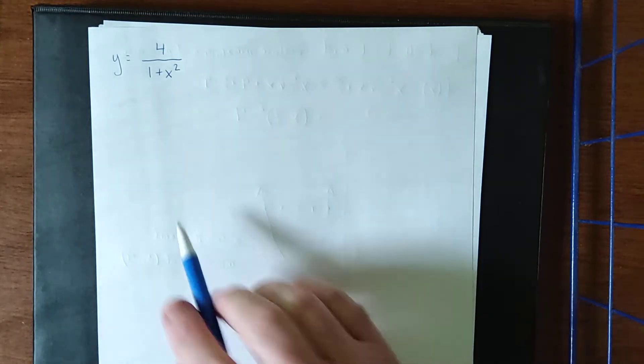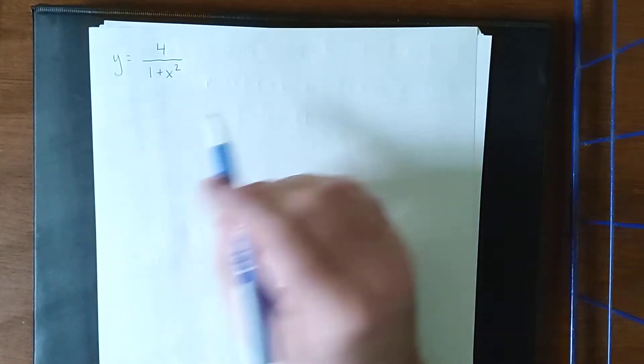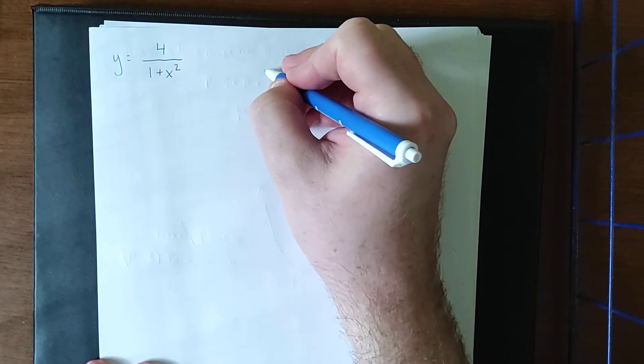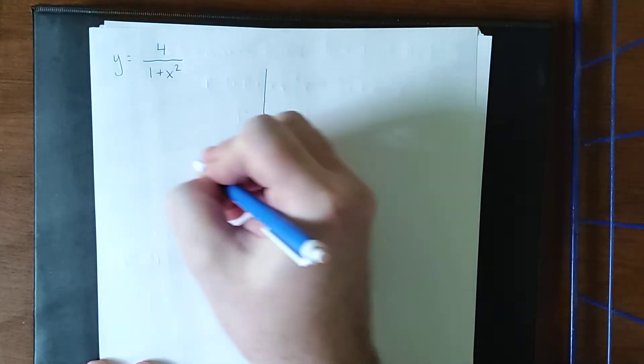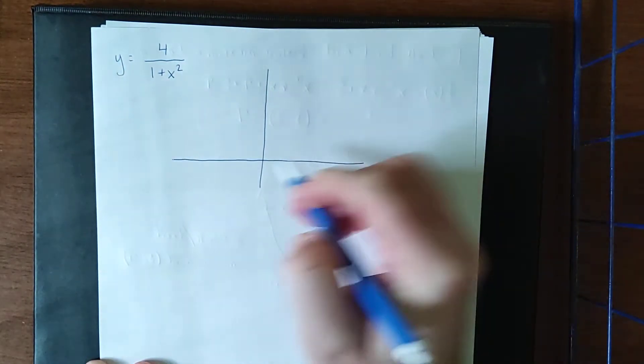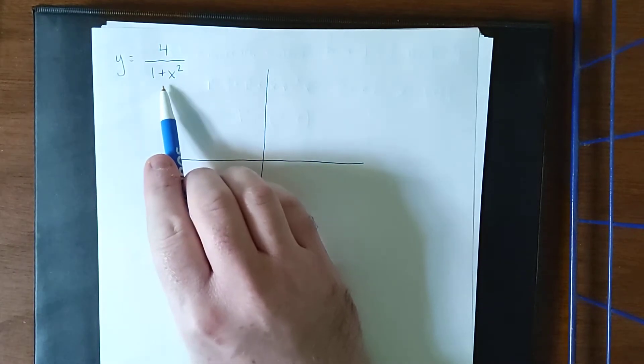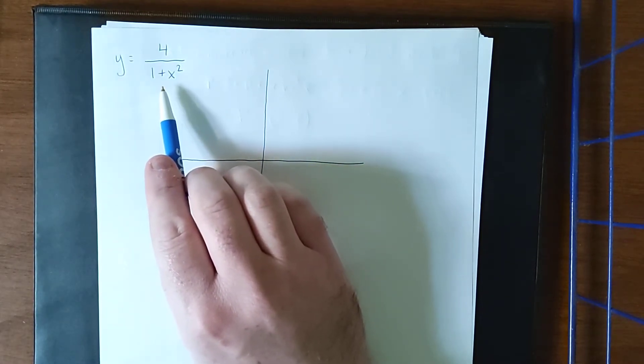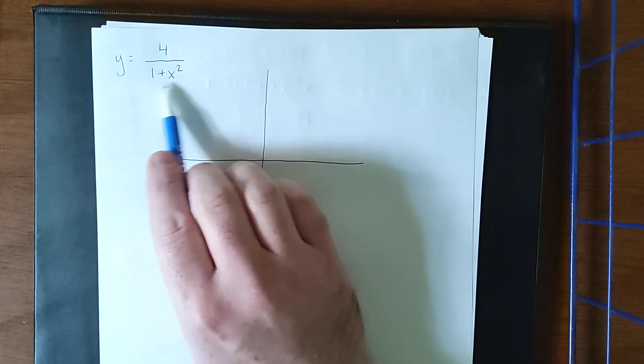For our next example, we'll be dealing with a rational function. So this would be 4/(1 + x²). Now if we just had the 1 + x², that would be a parabola that opens in the upward direction with a vertex at (0, 1).